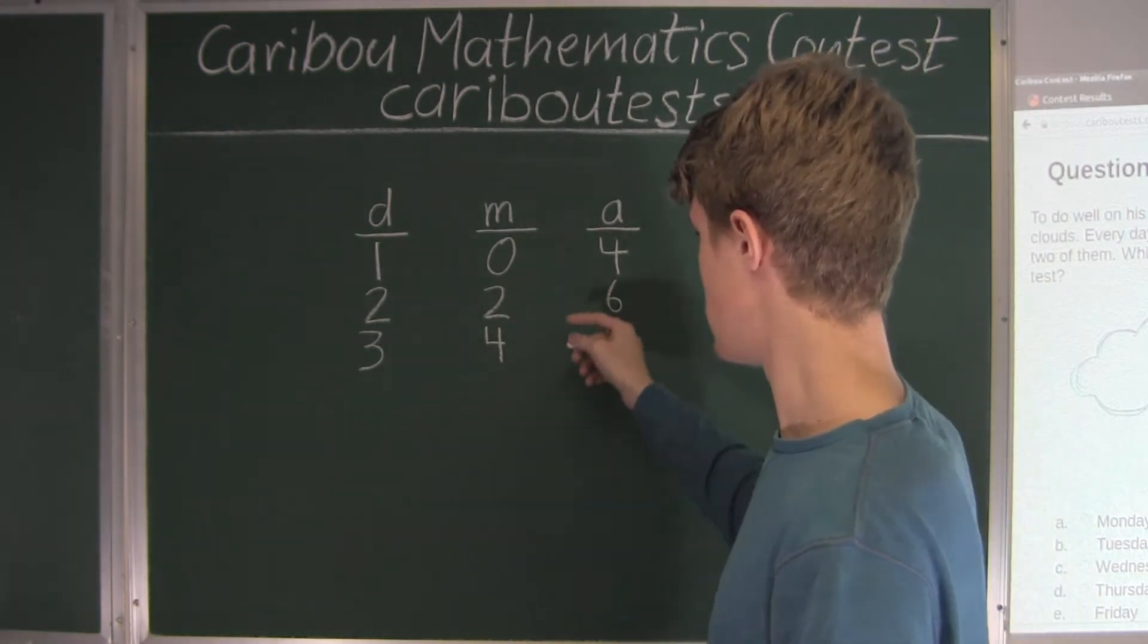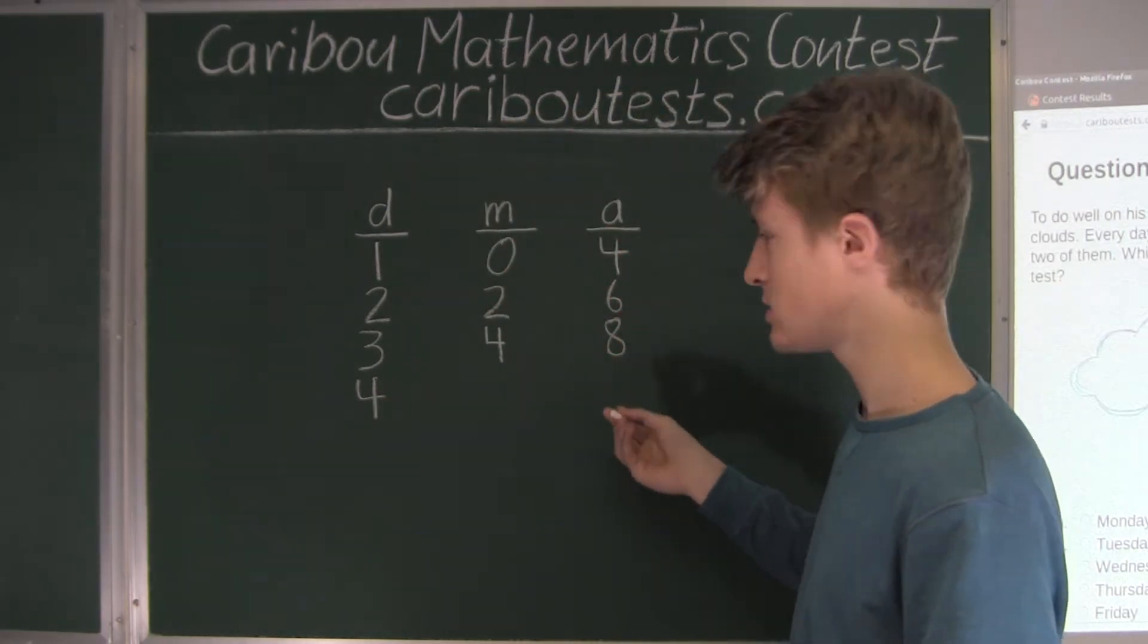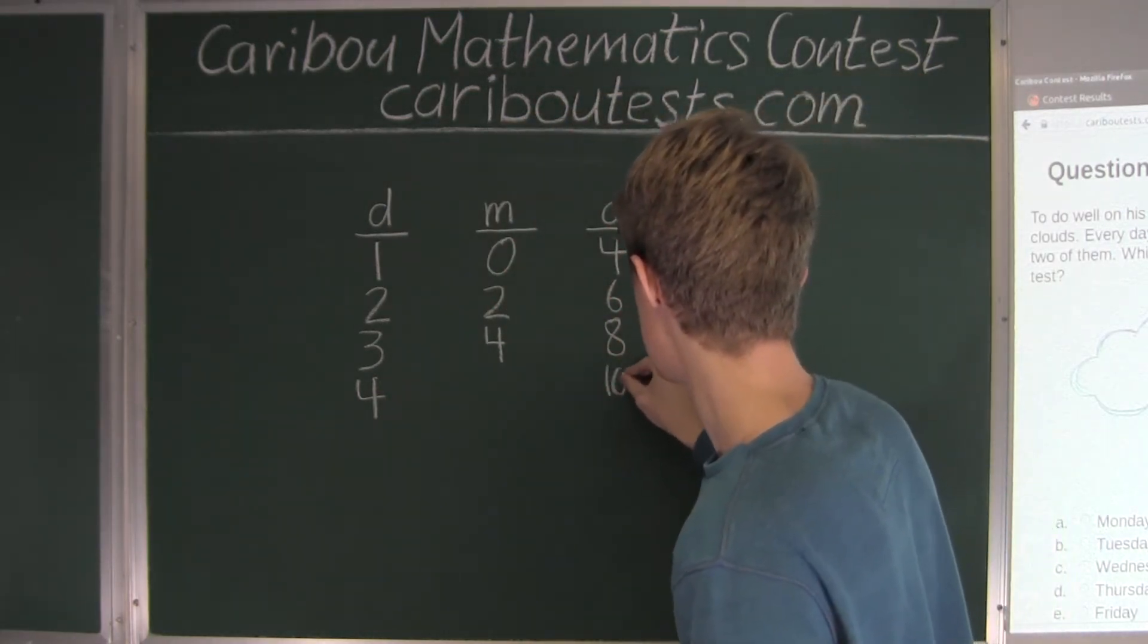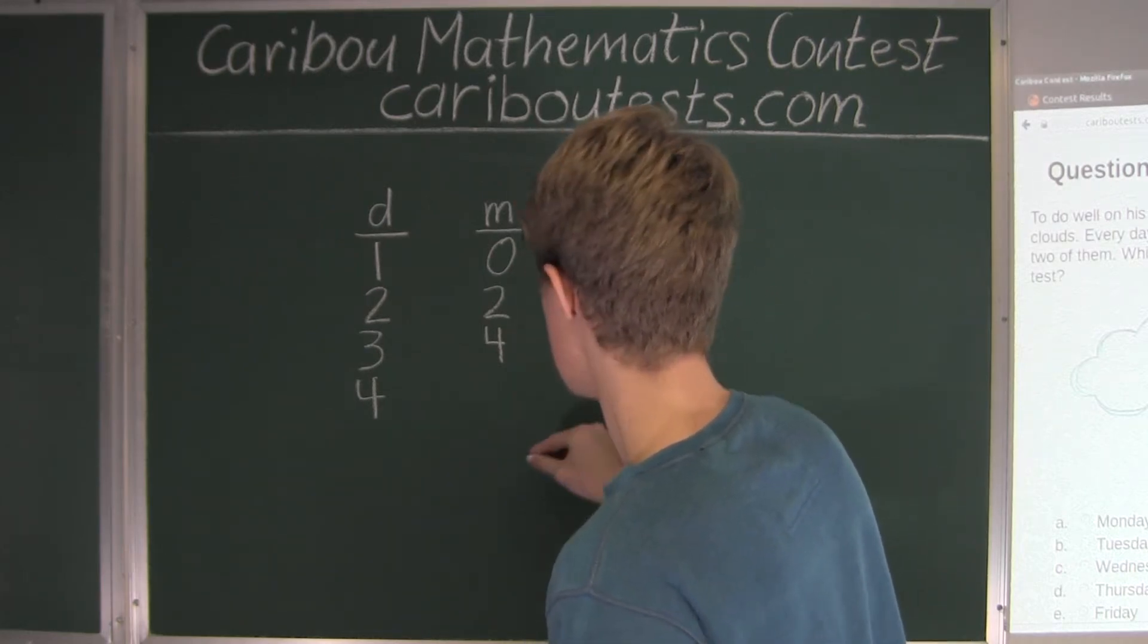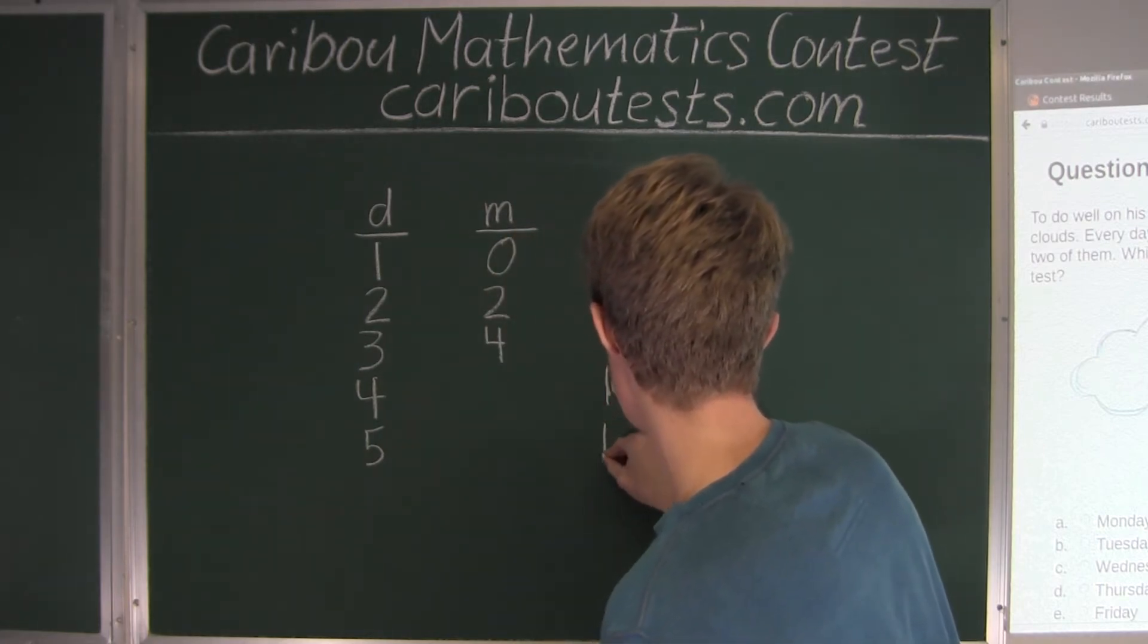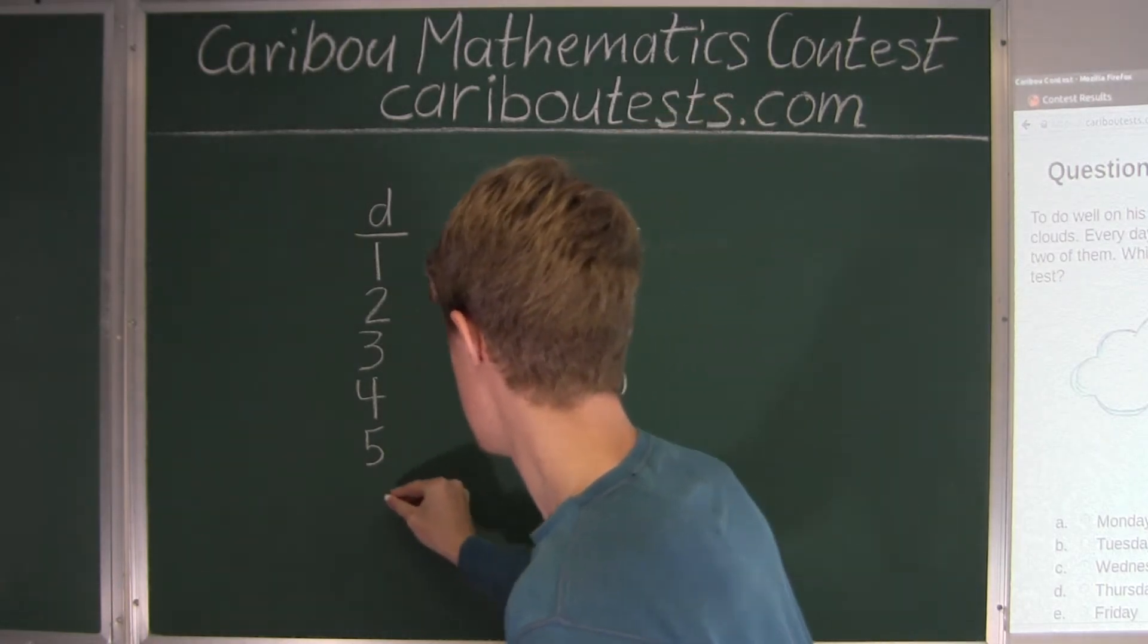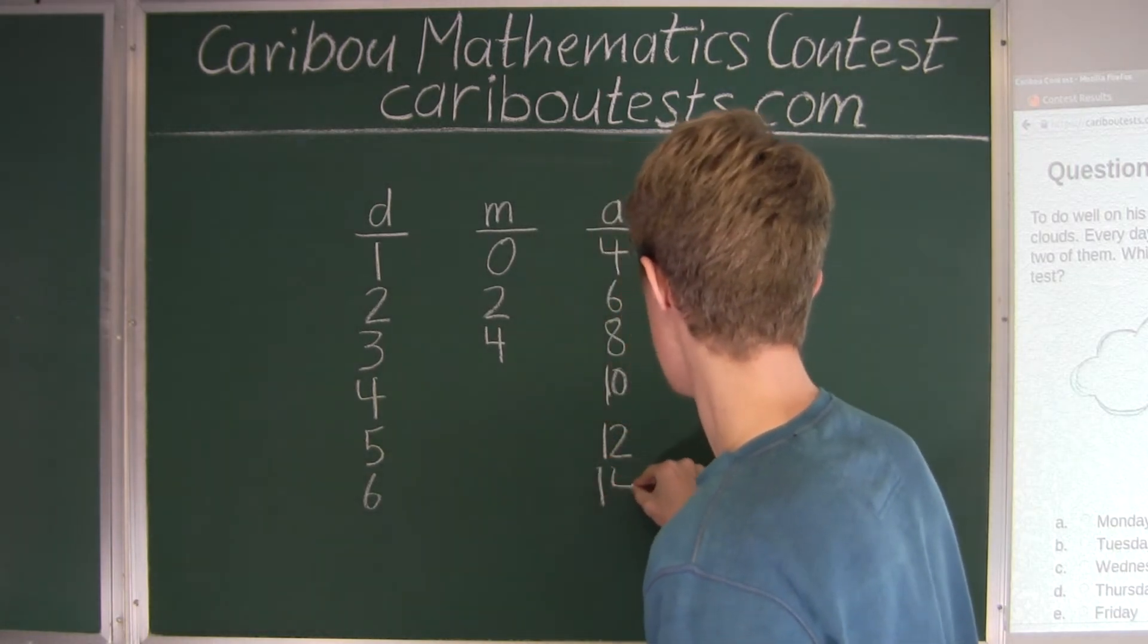Now we will just move ahead, so we have day 4, and we can just add this by 2. So here we would have 10. And then for day 5, he would have 12, and day 6, he would have 14 by the afternoon.